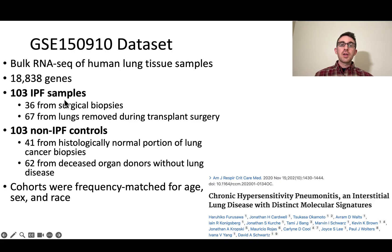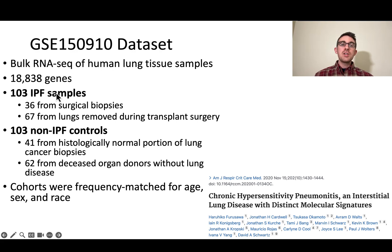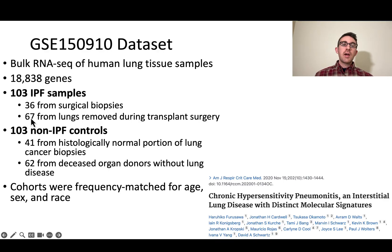The 103 IPF samples include 36 that are from surgical biopsies — basically patients who had lung biopsies confirmed to be IPF disease, biopsies of living patients. Then there are 67 samples from lungs of IPF patients that were removed during a transplant surgery, where the patient was getting a lung transplant and the 67 samples are from the old diseased lungs that were being taken out and replaced.